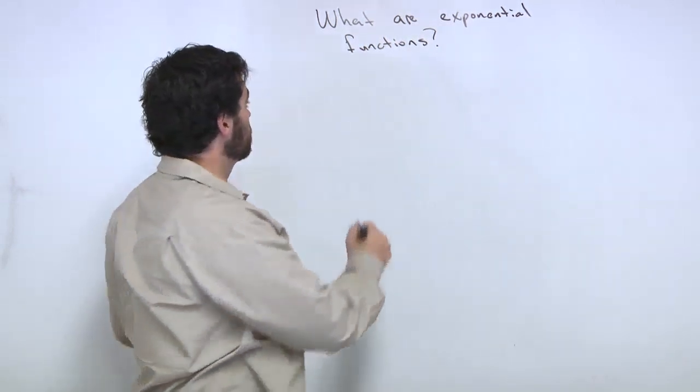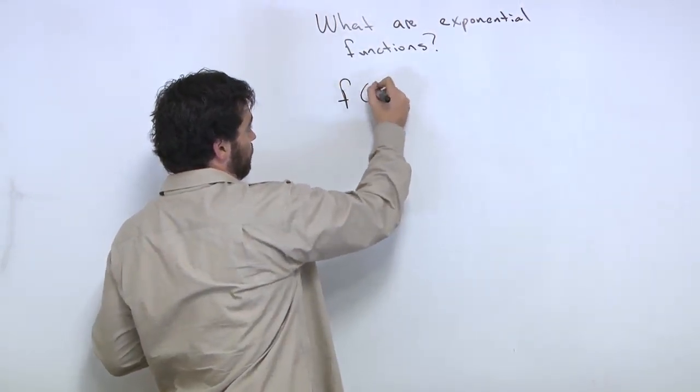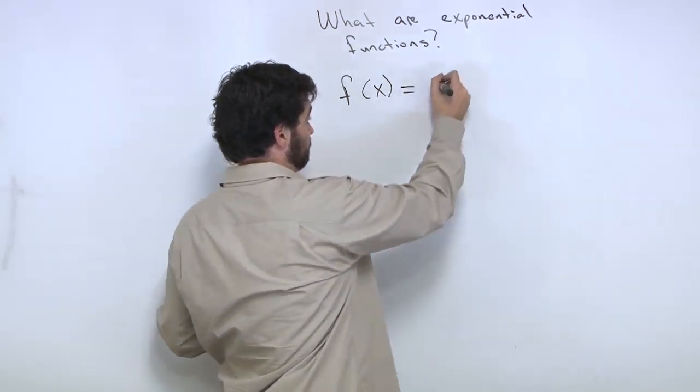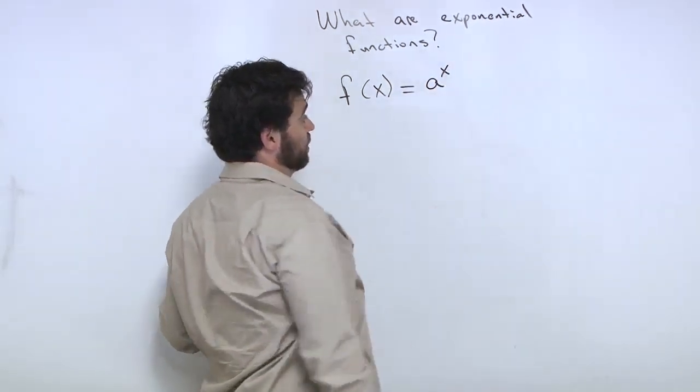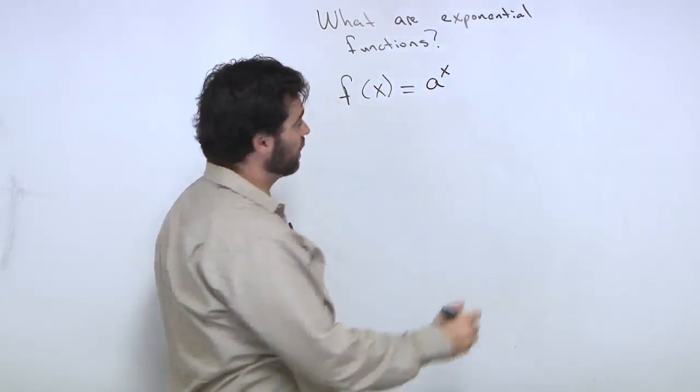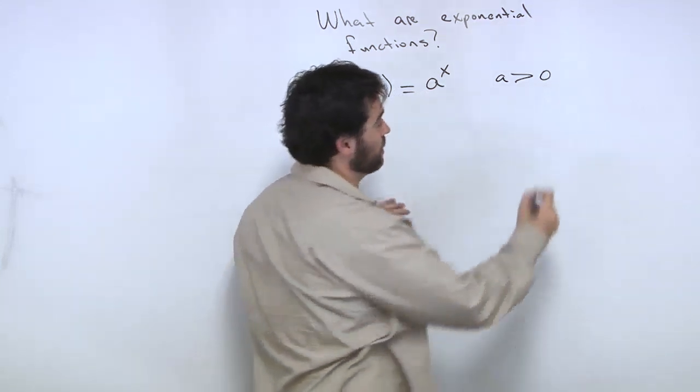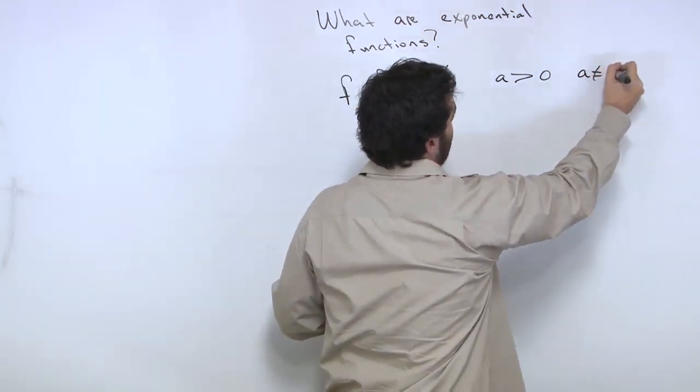Exponential functions are in this form: f of x is equal to a to the x, and a is greater than 0, and a is not equal to 1.